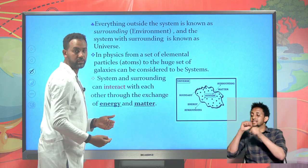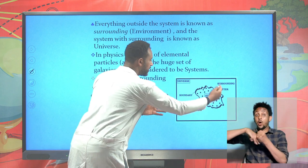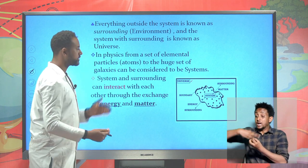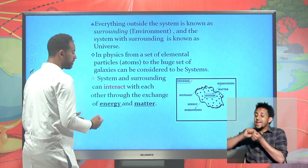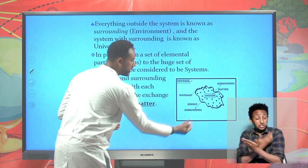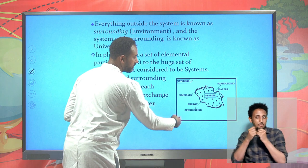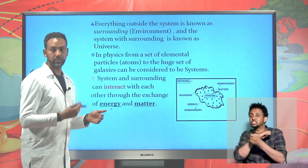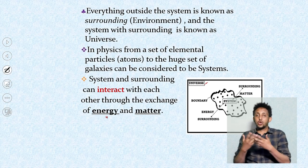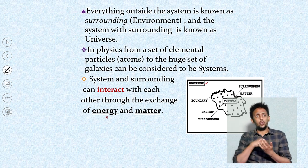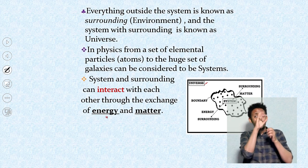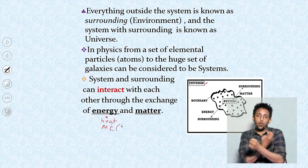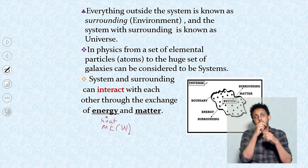Everything outside the system is known as the surrounding. The system and the surrounding in combination make up the universe as a whole. The system and surrounding can interact with each other through the exchange of matter and energy - energy or matter may flow in or out of the system. When we say energy, we focus on two forms: heat, and mechanical energy or mechanical work performed on or by the system.